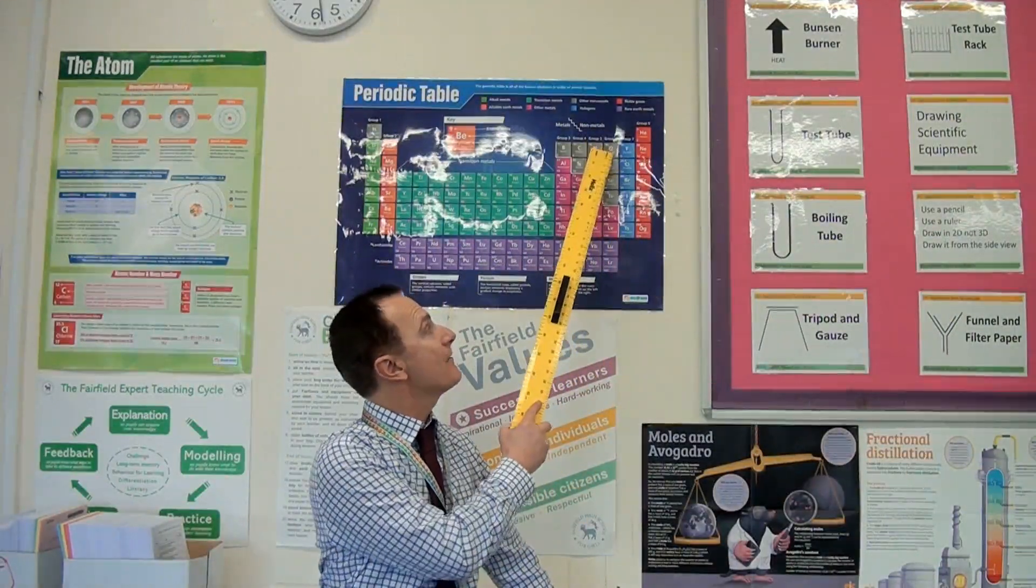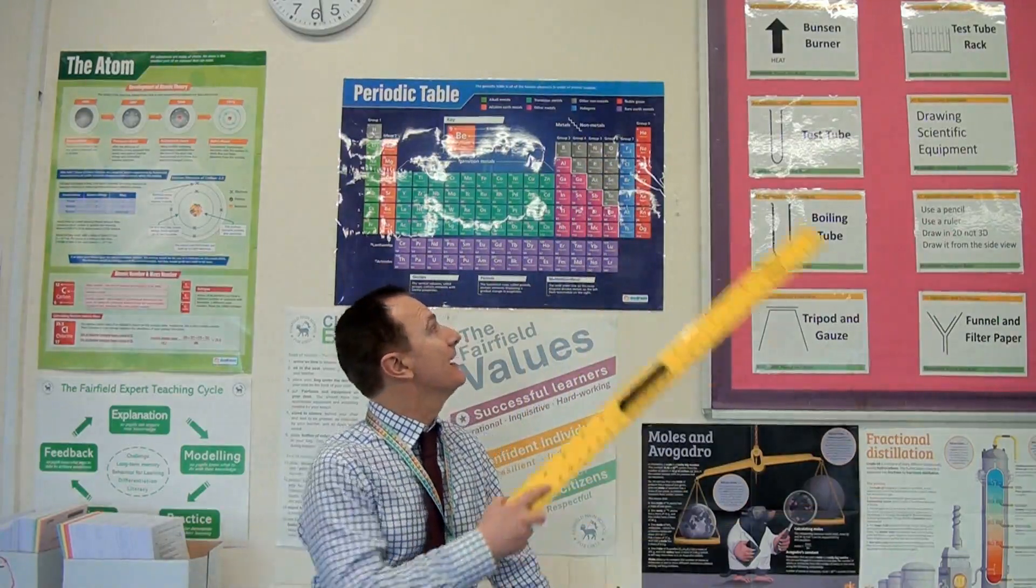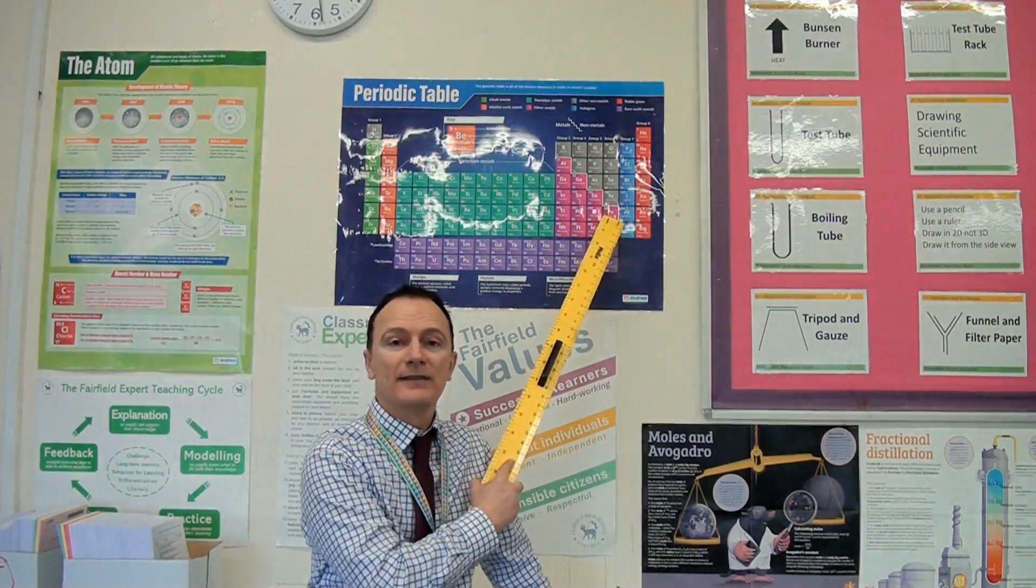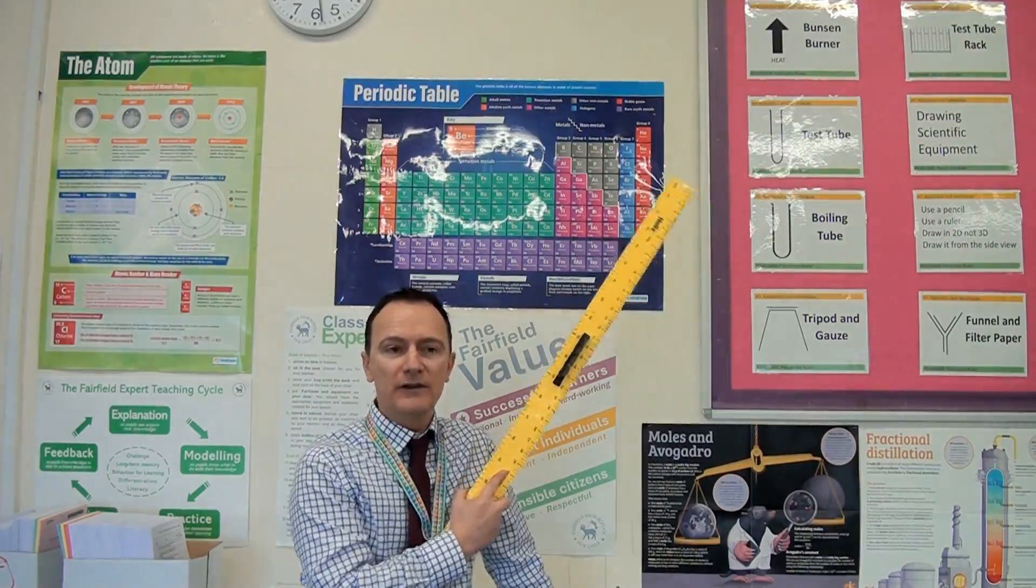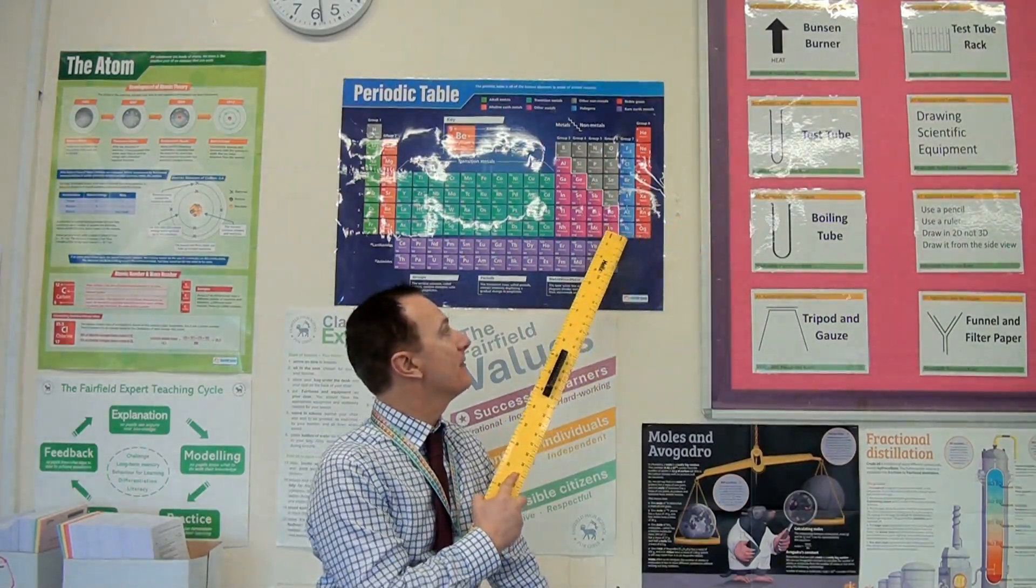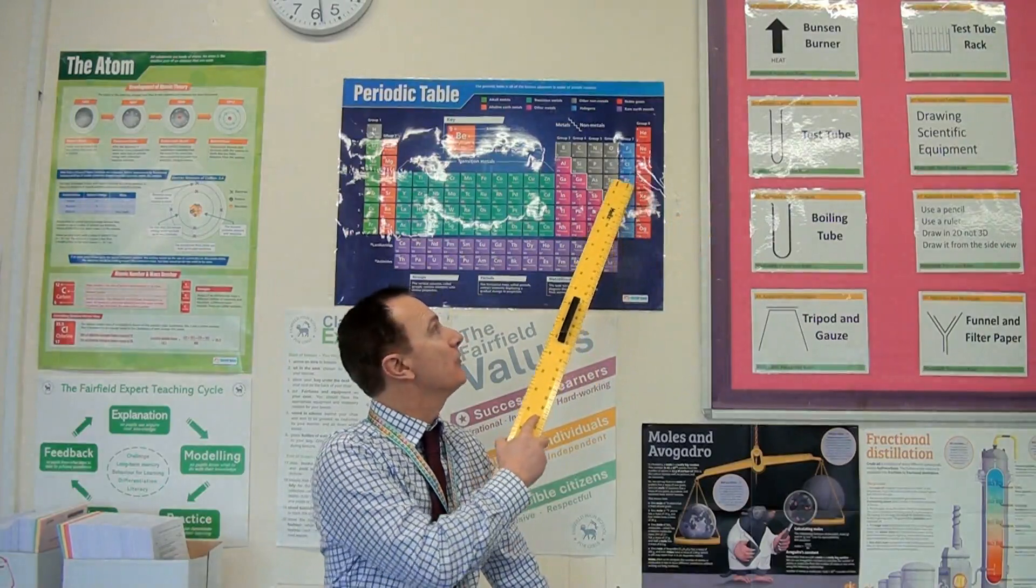Hi everyone, in the last video we looked at the displacement reactions of group 7, the halogens. And from those displacement reactions we worked out that the reactivity decreases going down group 7, or alternatively you could say the reactivity of the halogens increases going up group 7.